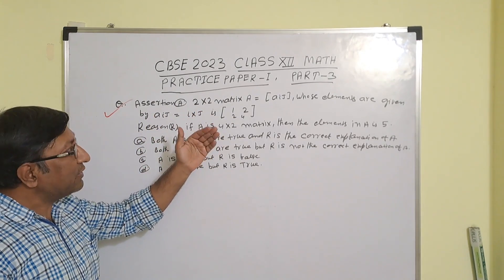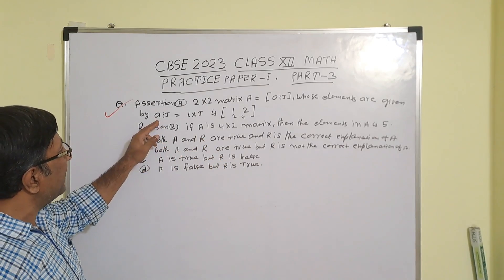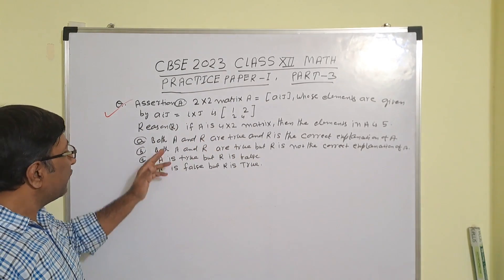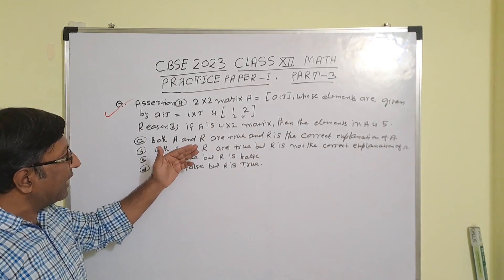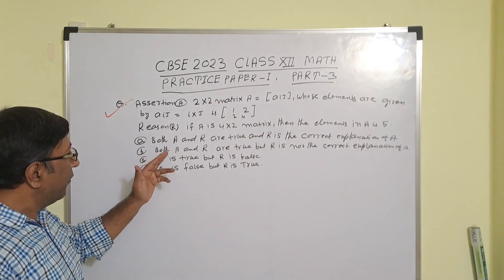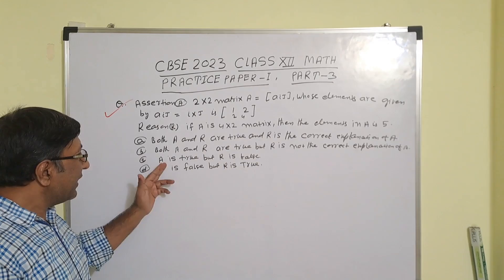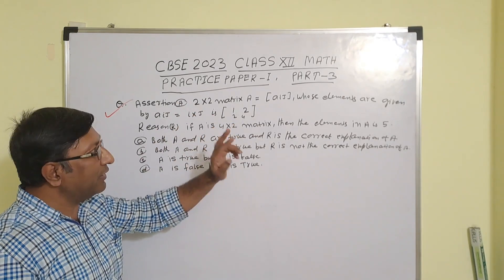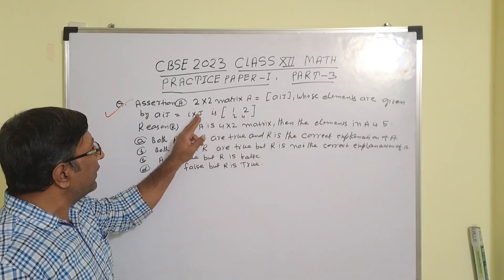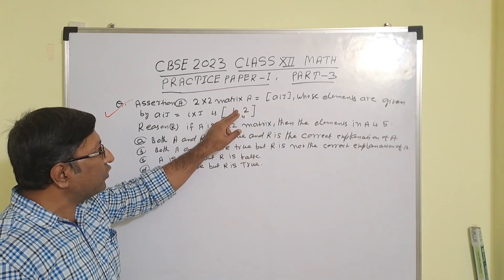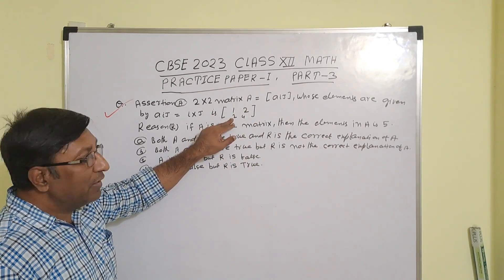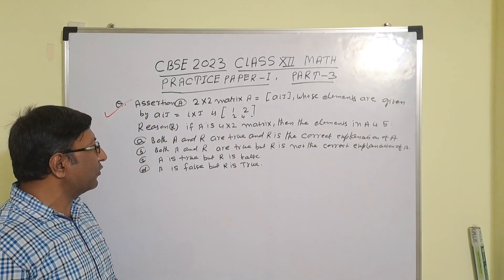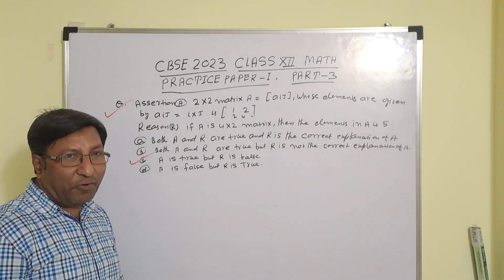Assertion-Reason question: A 2×2 matrix A = [aᵢⱼ] with elements aᵢⱼ = i × j. The reason states that a 4×2 matrix has 5 elements. Computing the 2×2 matrix: a₁₁=1, a₁₂=2, a₂₁=2, a₂₂=4. Assertion A is correct. But a 4×2 matrix has 4×2=8 elements, not 5, so reason R is false. Correct answer is C: A is true but R is false.